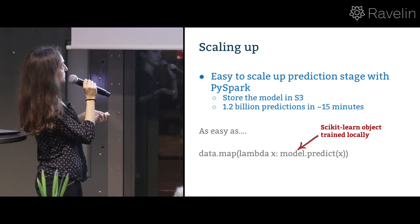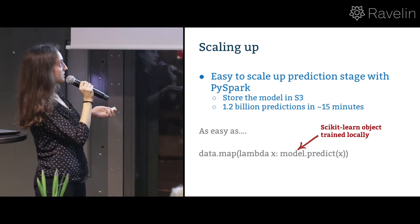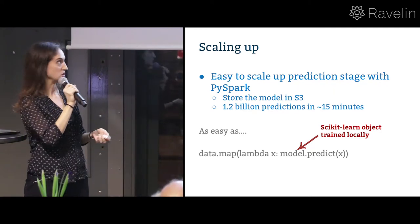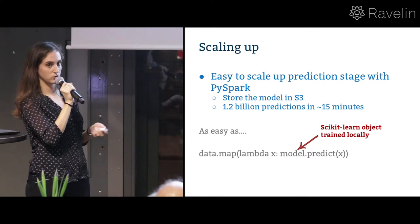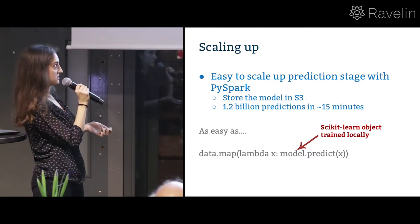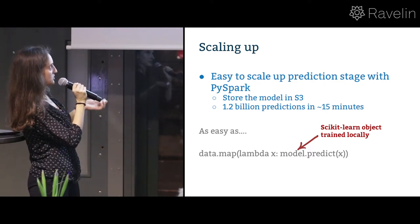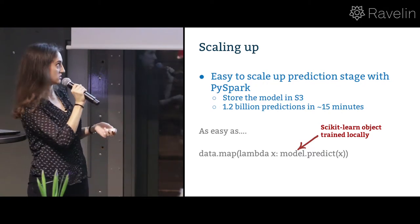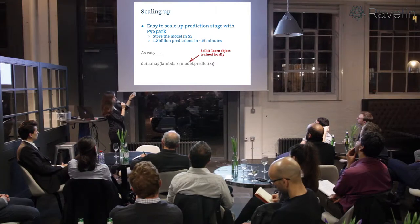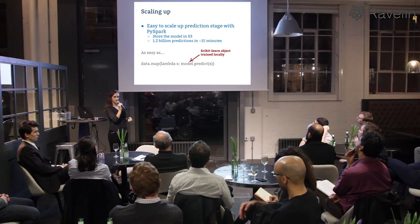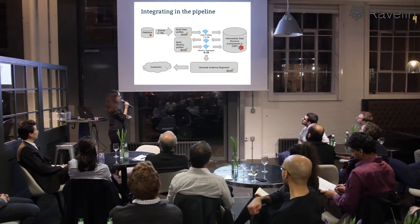You store the model in S3 — either something readable directly from Python, or just the bare minimum: the coefficients. Then we use Spark to run predictions on billions of rows in the unstructured dataset. After all the feature processing — which takes the most time — 1.2 billion predictions can be done in 15 minutes on 20 EC2 instances. It's very simple to scale with Spark: that's one line of code, where the model is the scikit-learn object trained on your local machine.